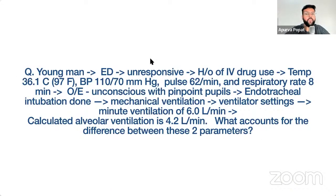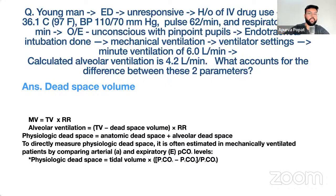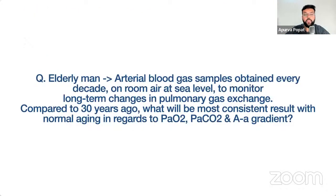A young man with IV drug abuse history is unresponsive with a respiratory rate of 8 and pinpoint pupils — opioid intoxication. He is mechanically ventilated with a minute volume of 6 liters but alveolar ventilation of only 4.2 liters. The remaining 1.8 liters is wasted in physiological dead space, which includes both anatomical dead space and alveolar dead space.